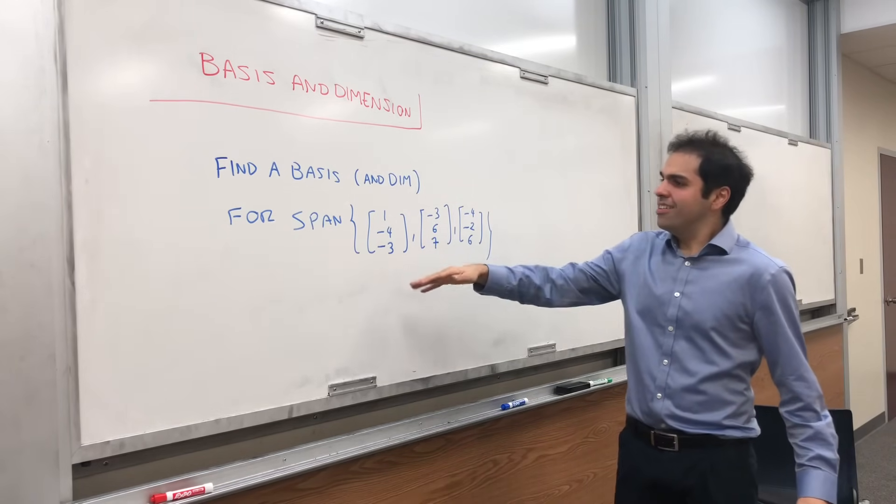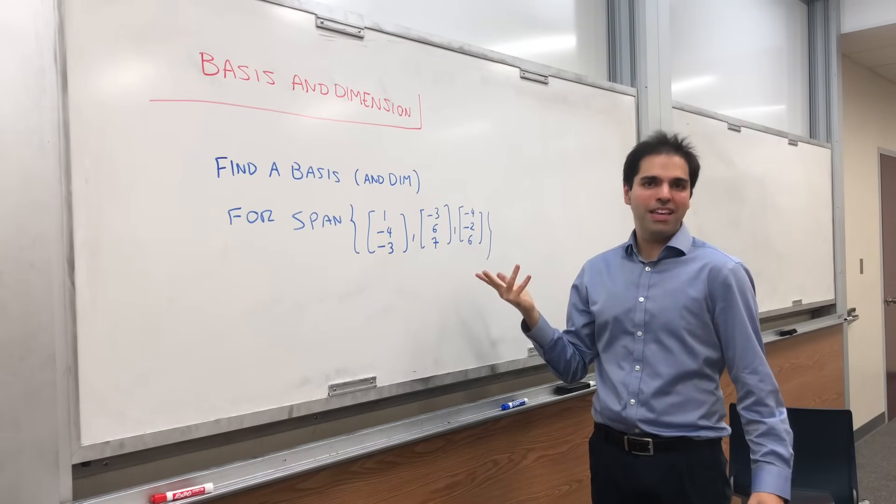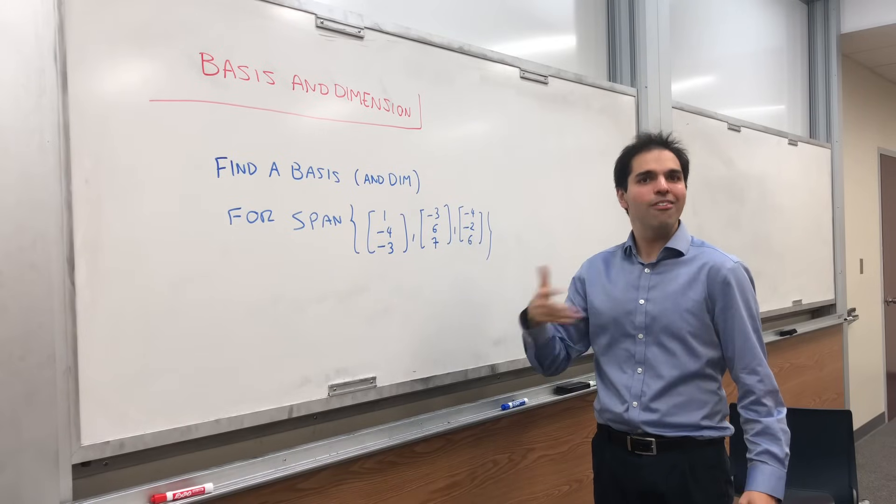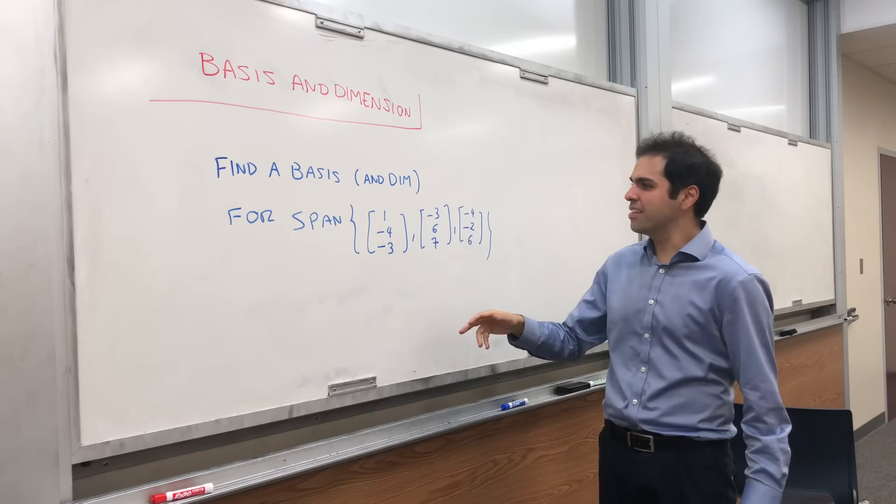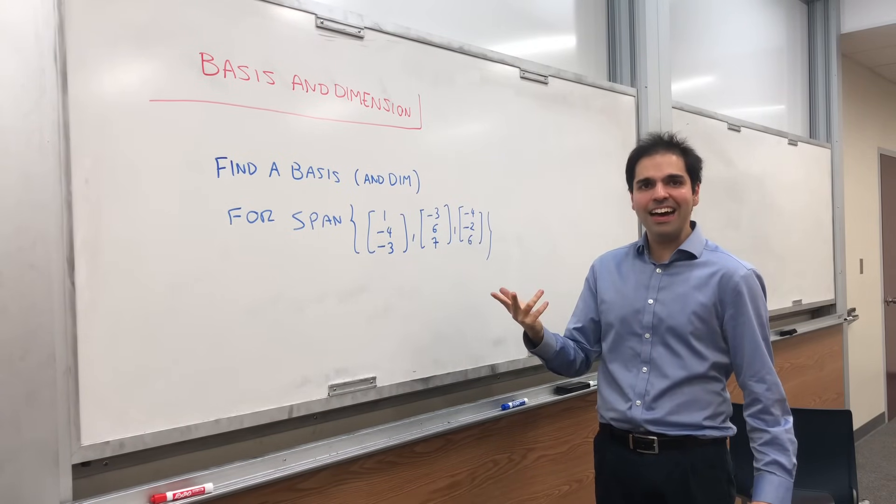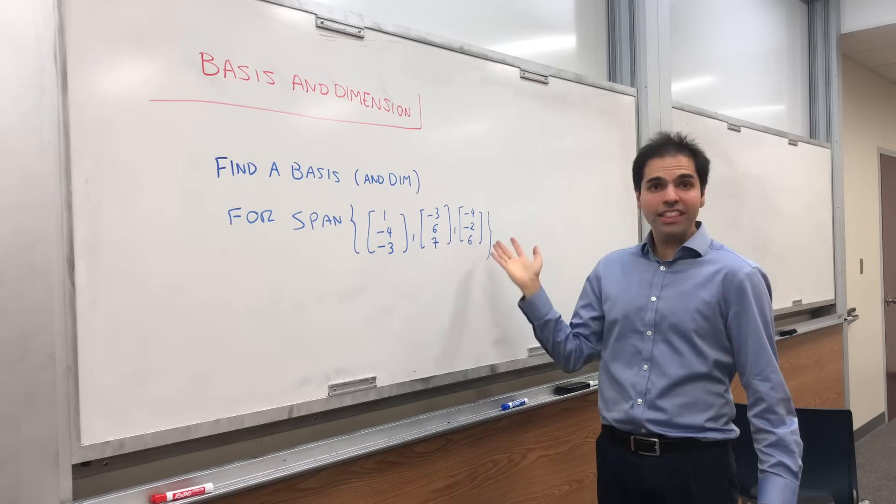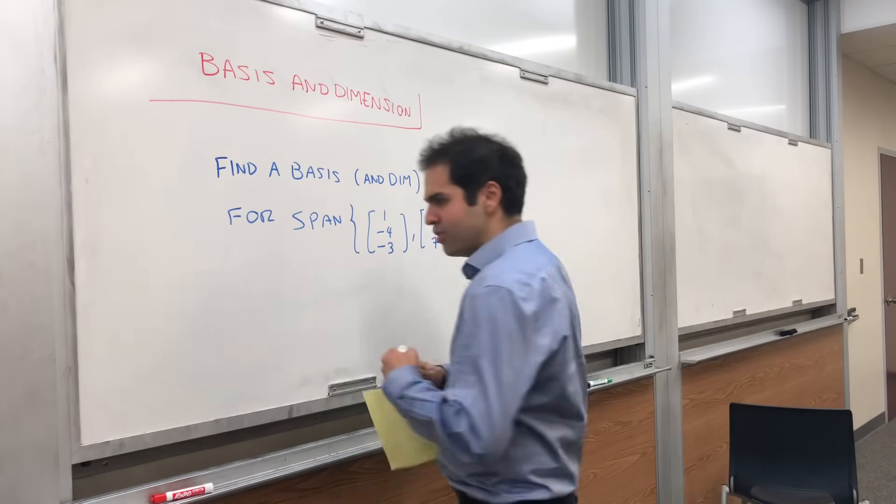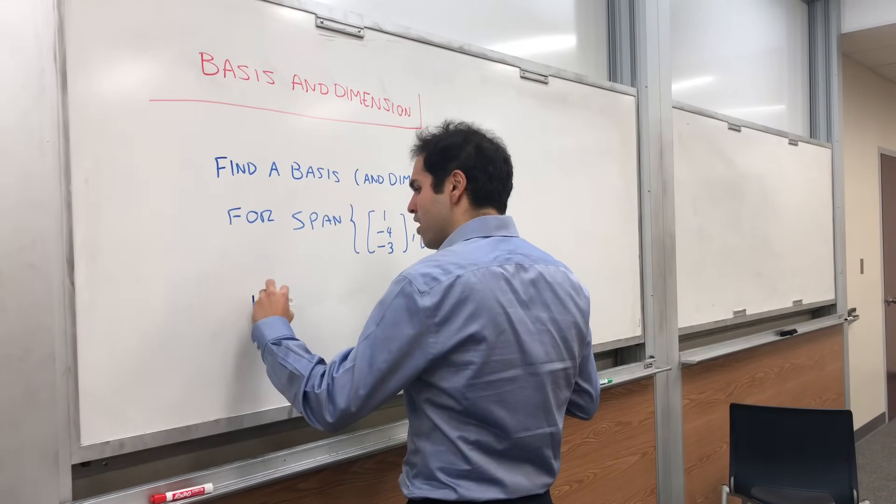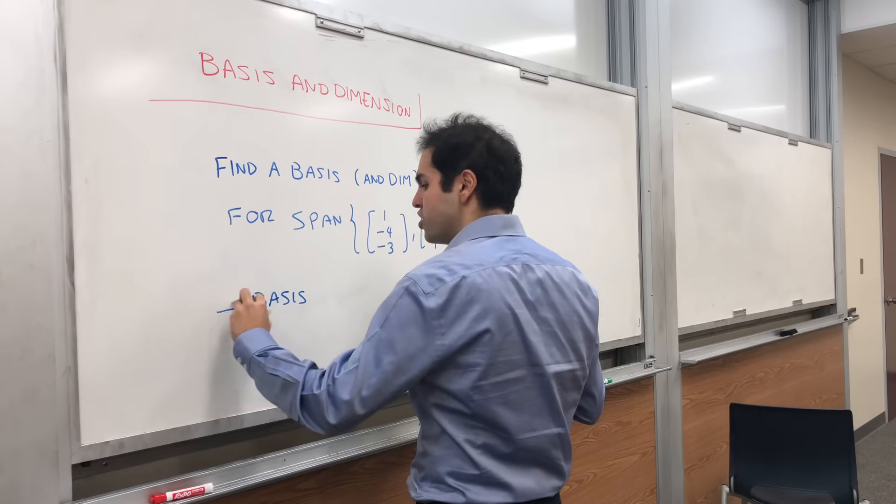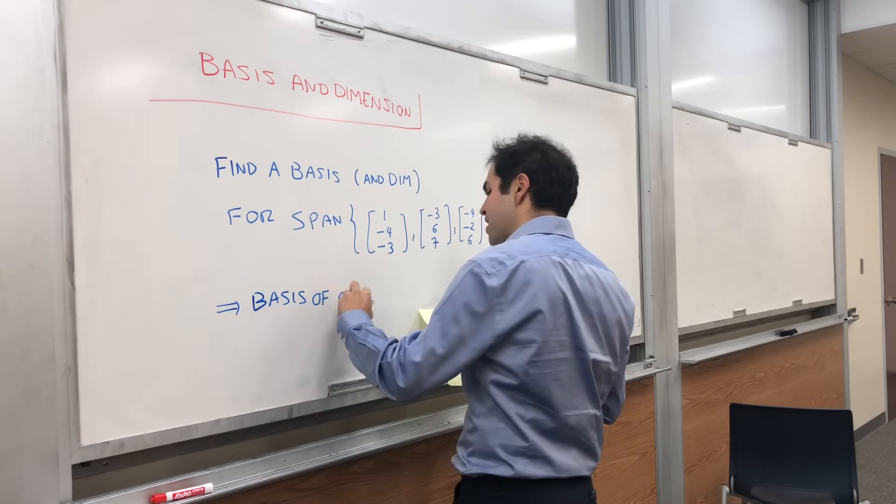Now, we know how to find a basis for the column space, and I will explain how to do this. But because we're really good at that, let's rewrite this as a column space. So really, this is equivalent to finding a basis and a dimension of the column space of A.